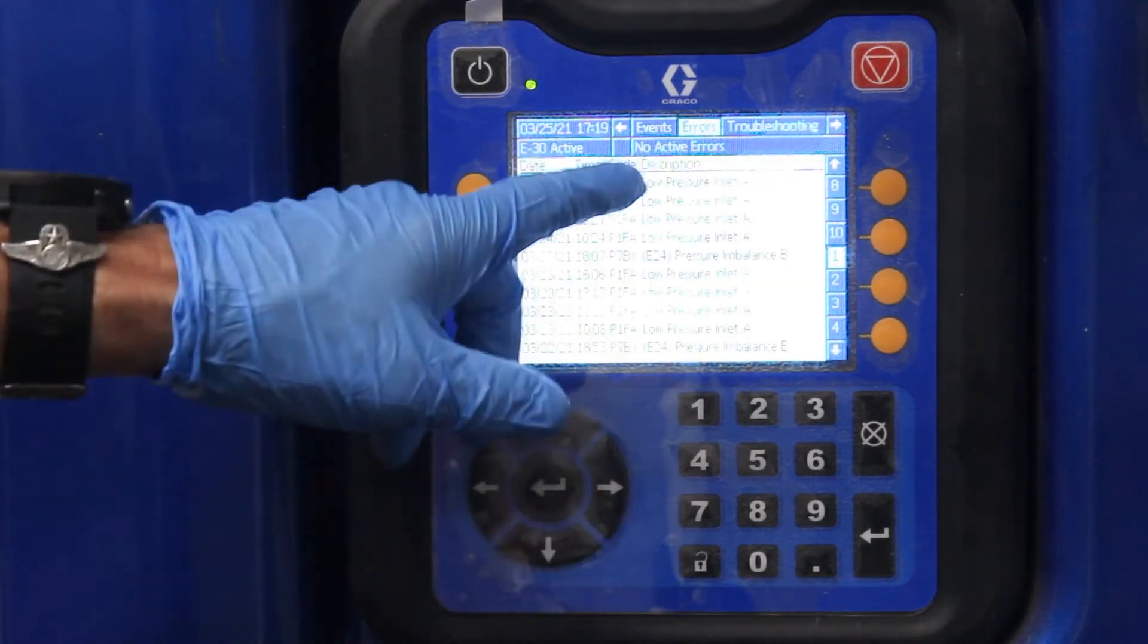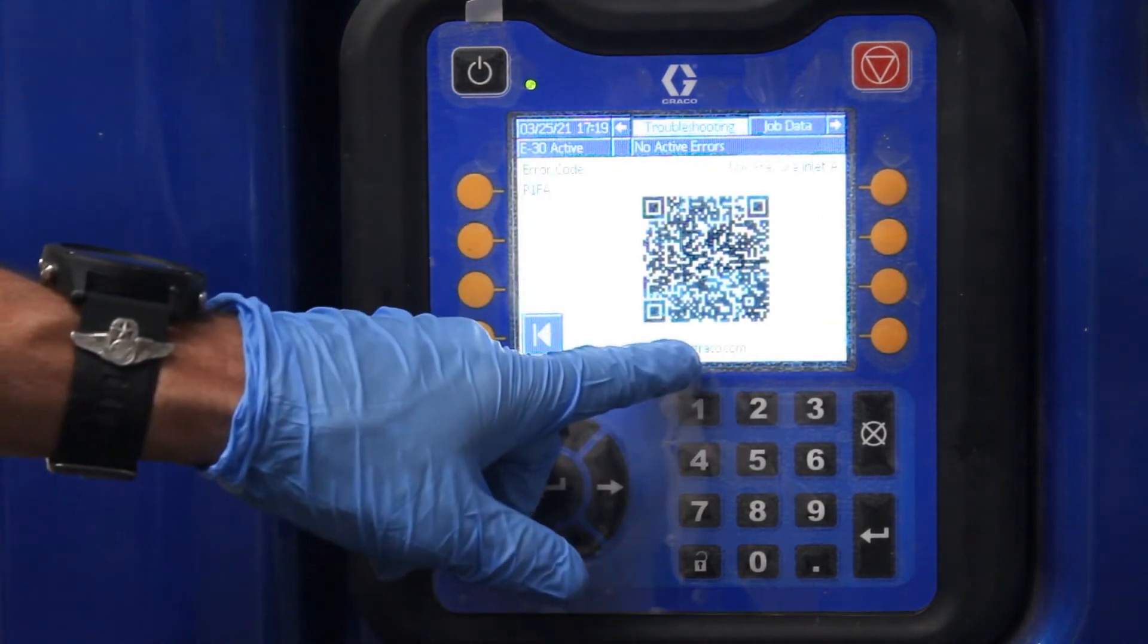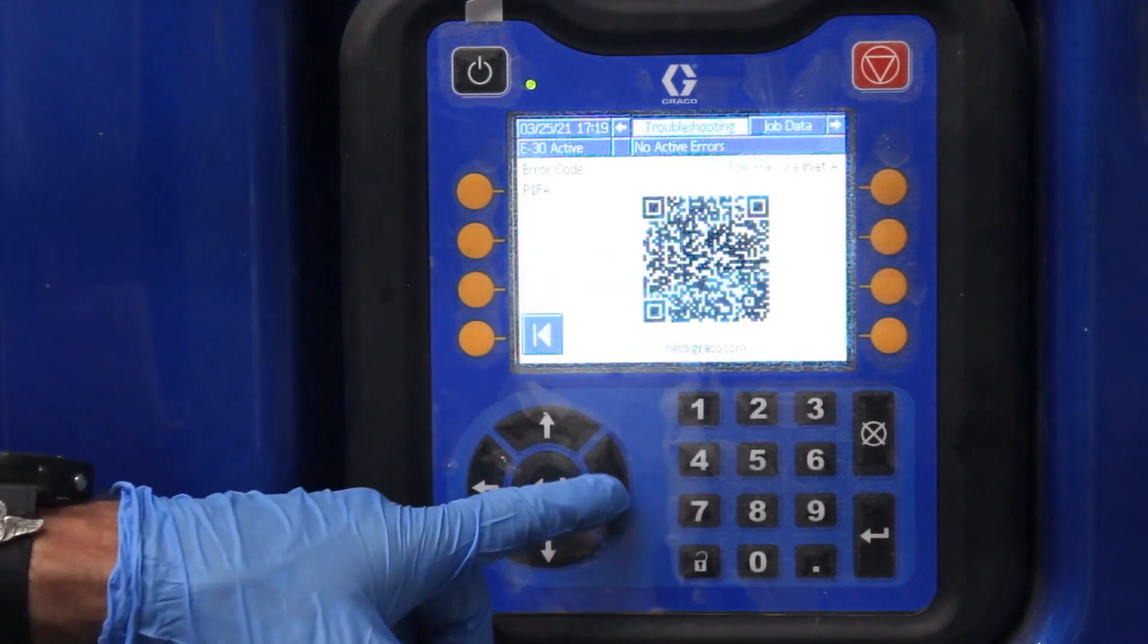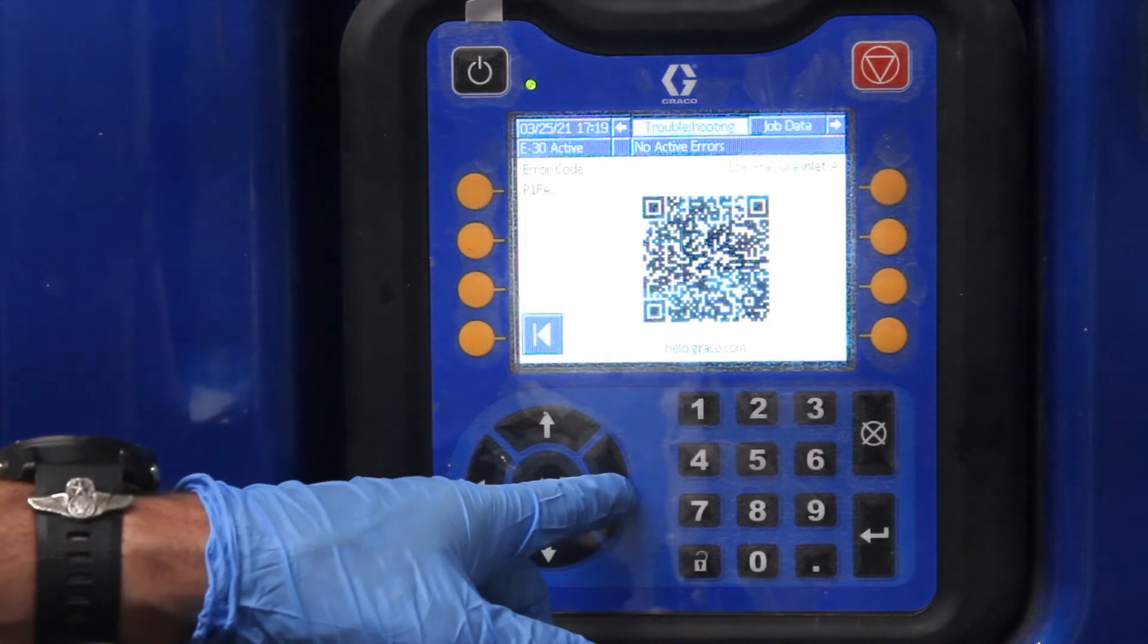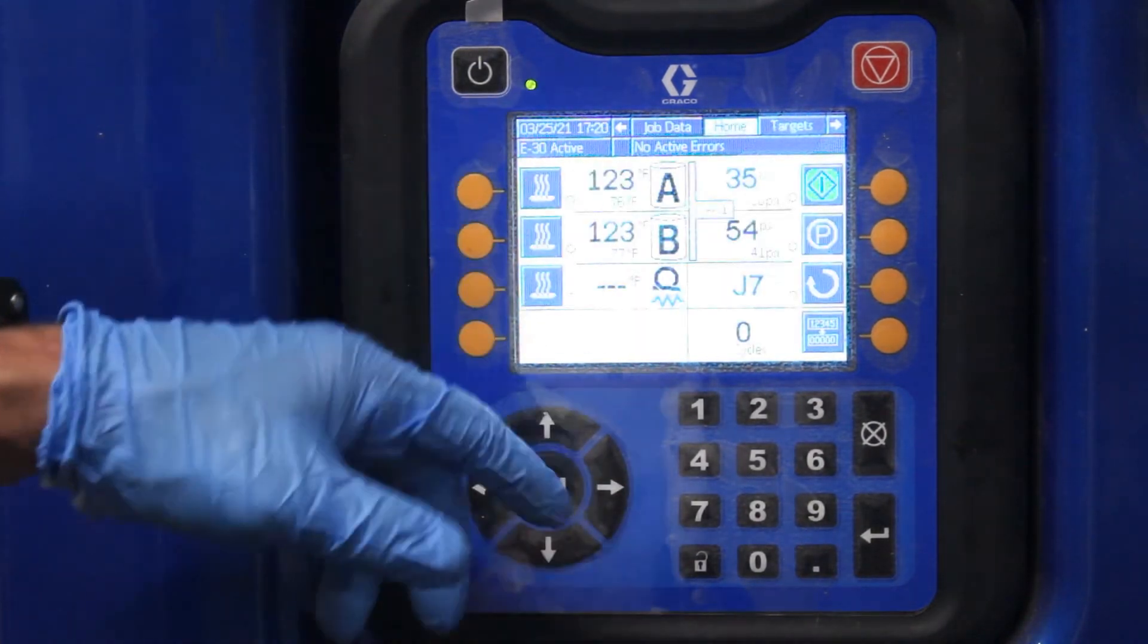This screen here, let's go back to that. That's your scan. If you do have an error, it'll give you a scan code. Just scan this. It'll tell you the top three things that are causing that error. Job name, you can put that in there.